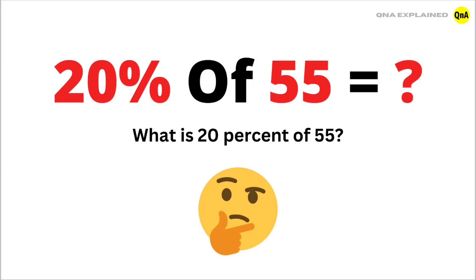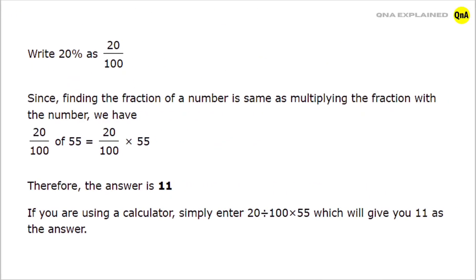What is 20% of 55? Write 20% as 20 upon 100. Since finding the fraction of a number is same as multiplying the fraction with the number, we have: